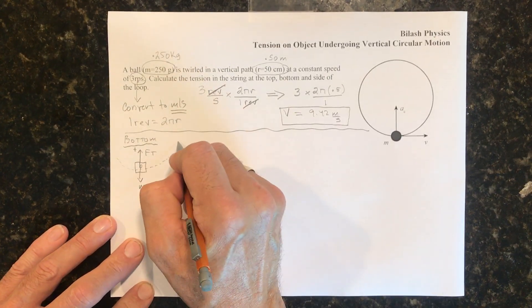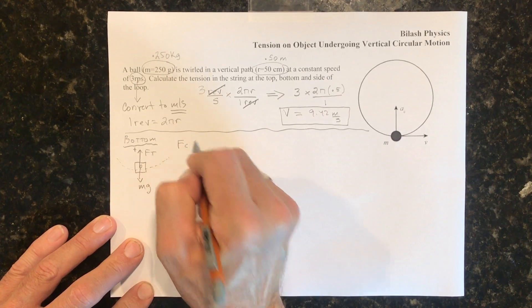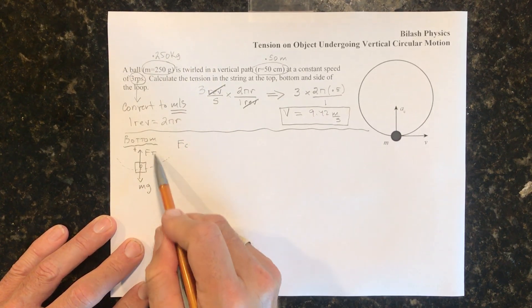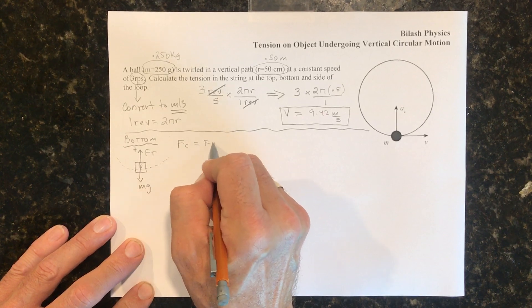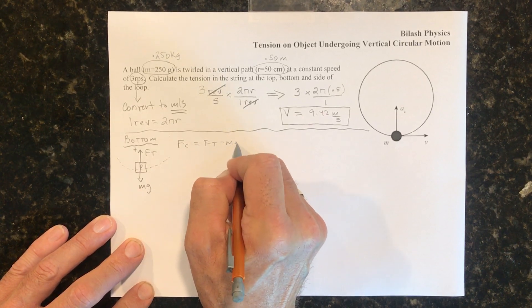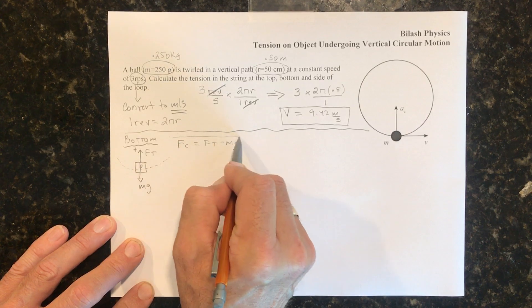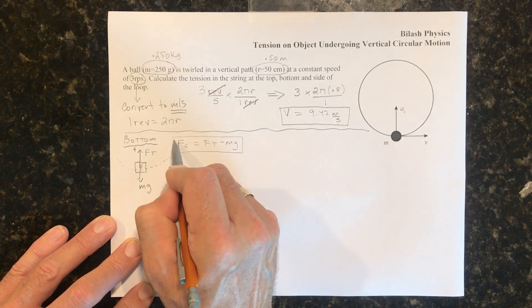So we know that Fc is going to be the sum of these two forces. So Fc will be Ft minus mg. So that applies to the bottom of the circle.